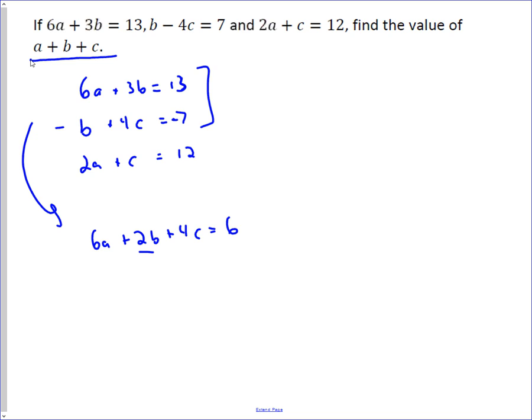And it turns out you can do that by subtracting twice, so multiplying by negative 2 or subtracting twice that third equation. If you do that, you get negative 4a and then minus 2c and then minus 24, so that gives you 2a when you add those together, plus 2b, plus 2c equals negative 18.